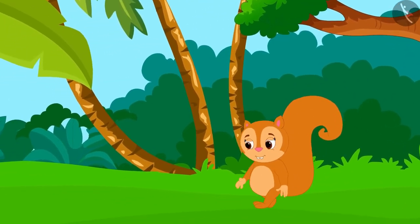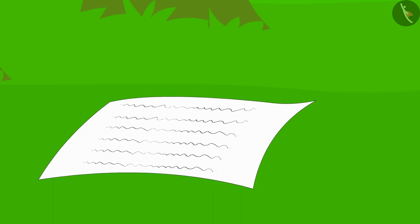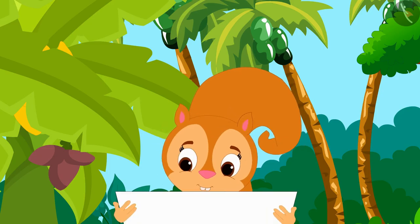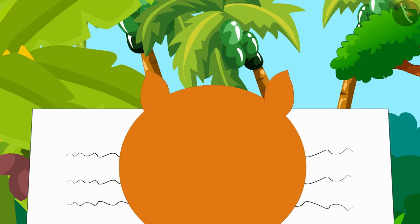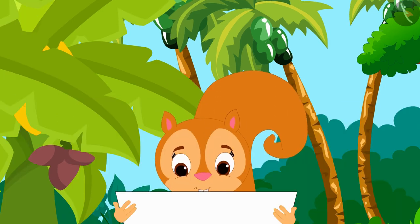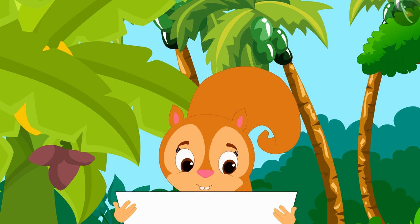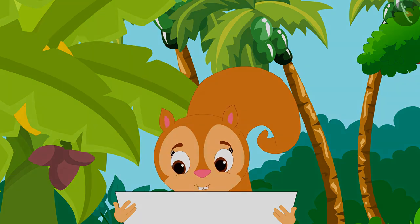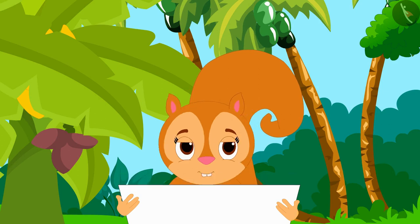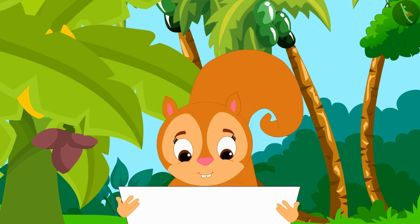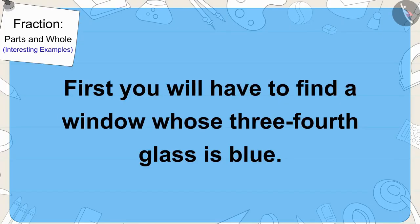One day Chanda was walking in the garden. There she found a letter. It was written in the letter that she would have to find some clues, and if she solves all the clues she would find a treasure. Chanda got excited and quickly read the letter further. It was written that first Chanda will have to find a window.